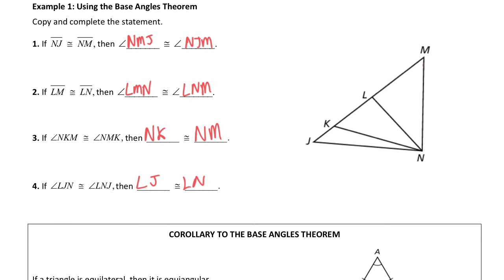For number three, I got NK and NM are congruent, and I'm going to show you why I came to that conclusion. Angle NKM, I'm going to mark first. NKM is this angle right here. Angle NMK is this angle right here.